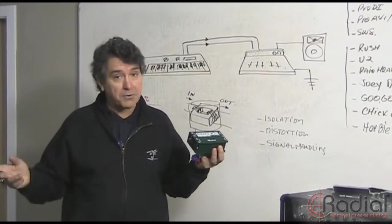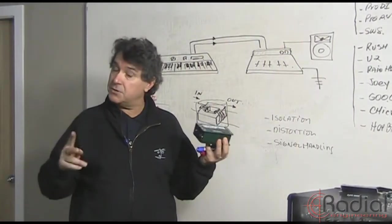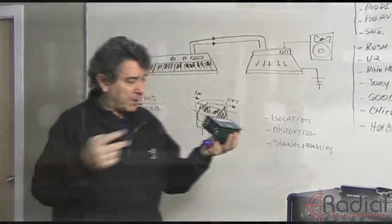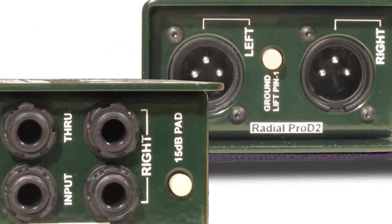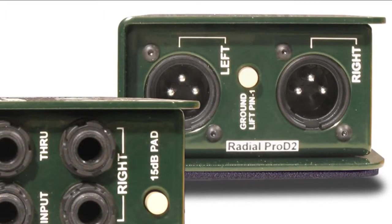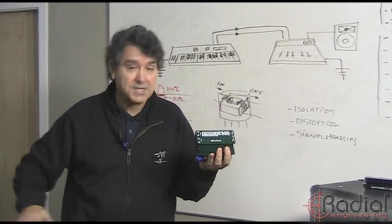It's designed for stereo keyboards or two mono keyboards. Both channels are completely isolated so it doesn't matter. You can use it as two mono or stereo. You plug your keyboard in, the output is XLR. You've got a throughput that lets you feed your own personal monitoring system or whatever you might have, a mixer on stage or something.